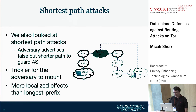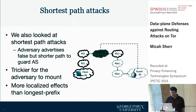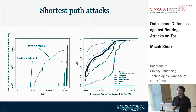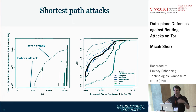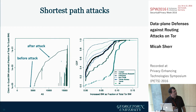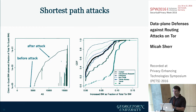We also looked at shortest path attacks. Shortest path attacks are more localized — they only affect a smaller group of relays and clients. Before the attack, very few of the ASes were actually able to be on the ingress path by happenstance. But by launching the attack, you're able to get not a huge amount of TOR bandwidth, but more than zero.